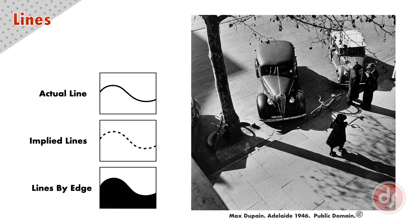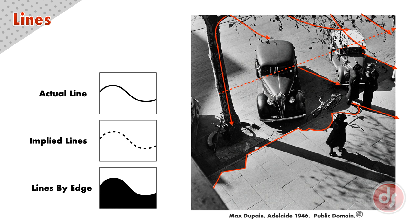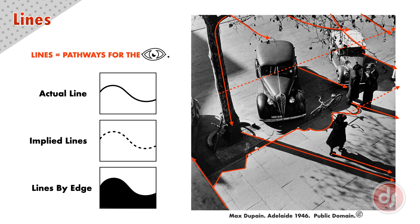We can see all of these lines here in this photograph by Max Dupin. We have the actual lines of the tree branches, the implied lines connecting the cars, the lines from the edges of the shadow shapes, and more. All of the lines in the design act as the underlying structure of the artwork and they will become the pathways for the viewer's eyes to move around the piece.